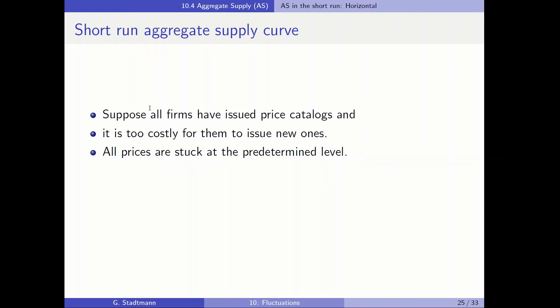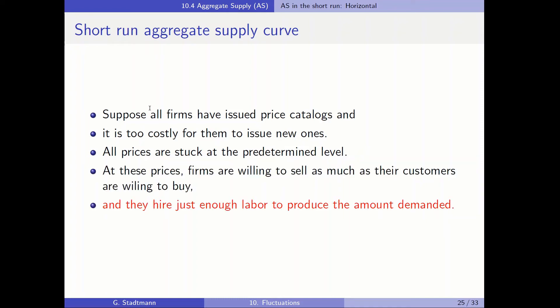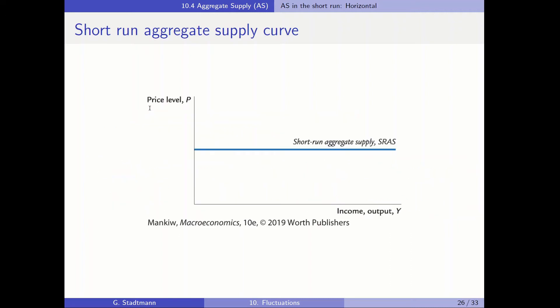Now let's talk about the short-run aggregate supply curve. Let's assume that all firms have issued price catalogs and it is too costly for them to issue new ones when new information arrives, so all prices are stuck at a predetermined level. At these prices, firms are willing to sell as much as their customers demand, and companies hire just enough labor to produce the amount demanded. In this scenario, the short-run aggregate supply curve is a horizontal line, because prices are fixed and companies produce whatever amount is demanded.